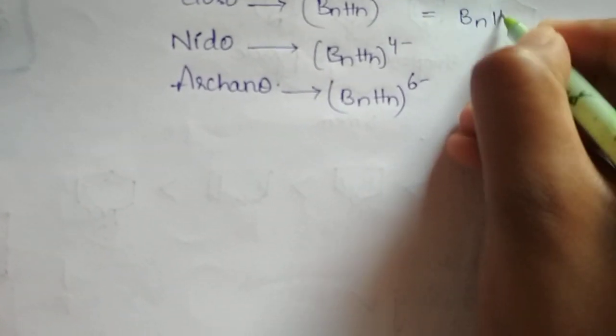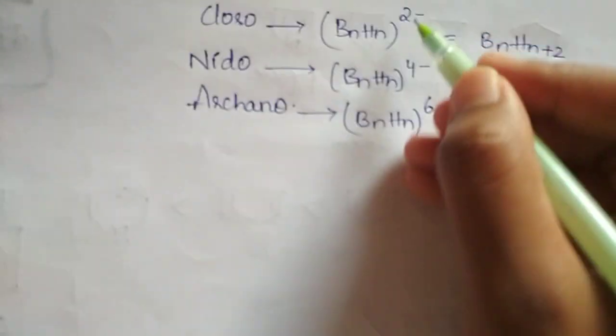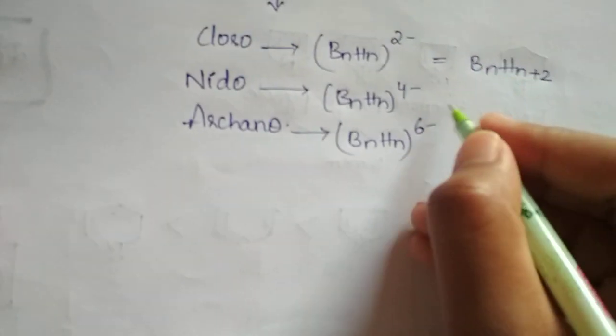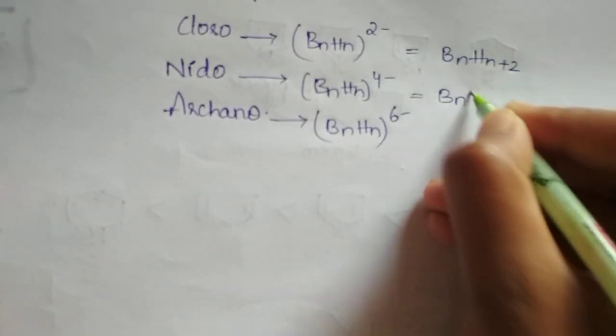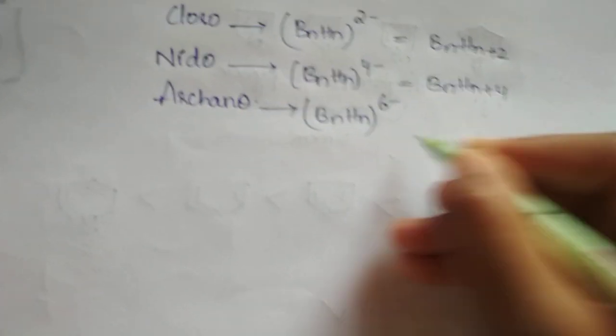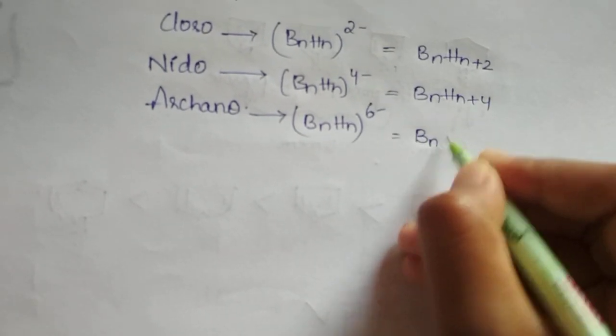It can also be written as BN HN plus 2 for Closo, BN HN plus 4 for Nido, and Arachno BN HN plus 6.